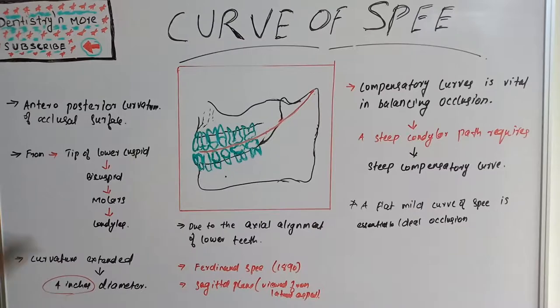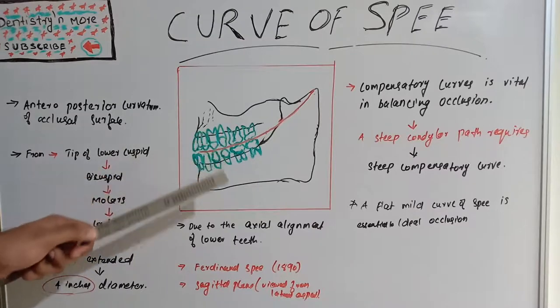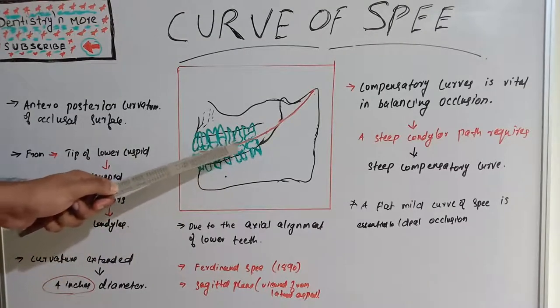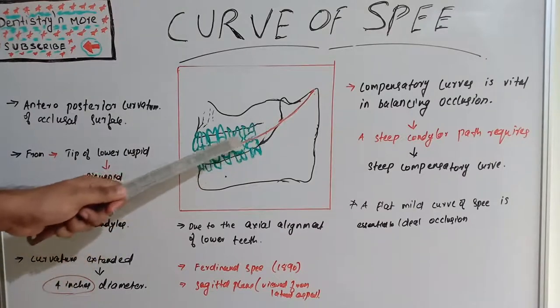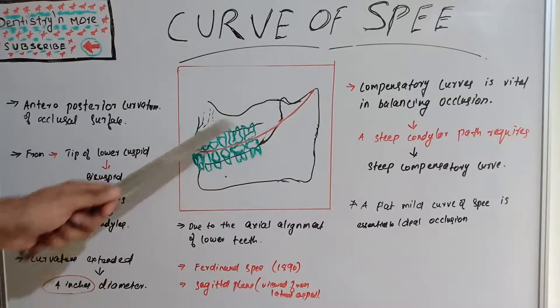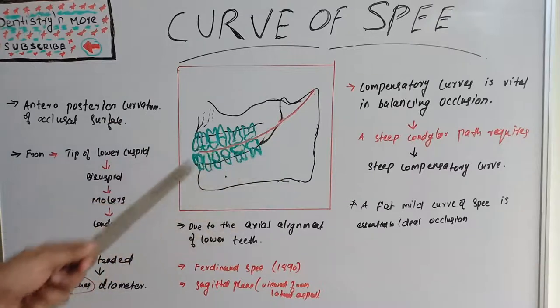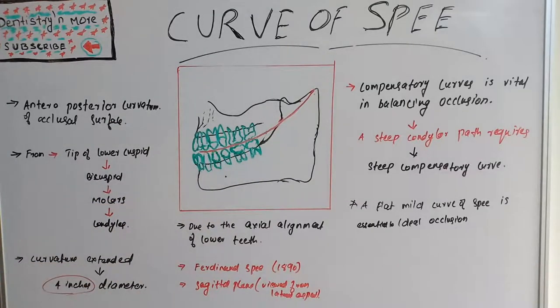The concavity increases or deepens in deep bite patients. So if there is deep bite, this concavity of 1 to 1.5 mm increases. A flat reverse curve of spee is seen in patients with open bite.